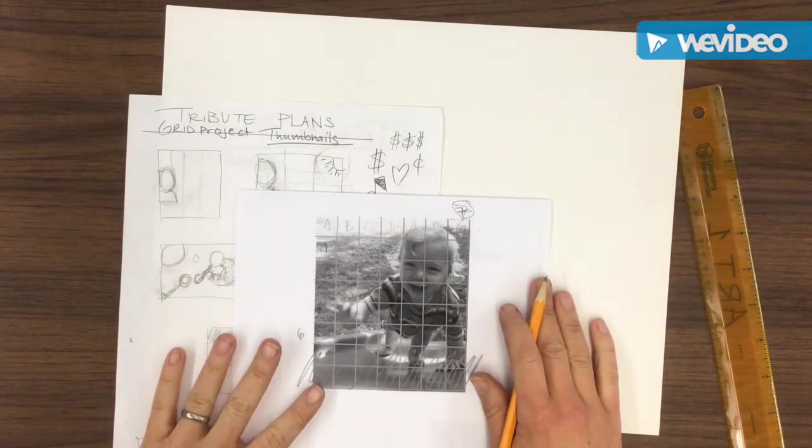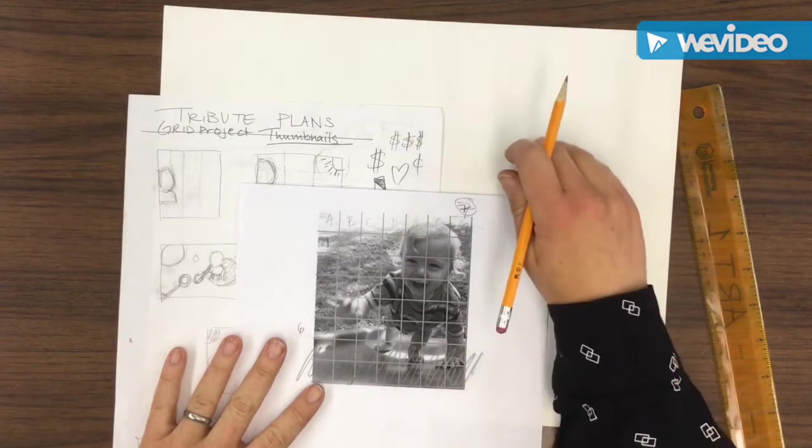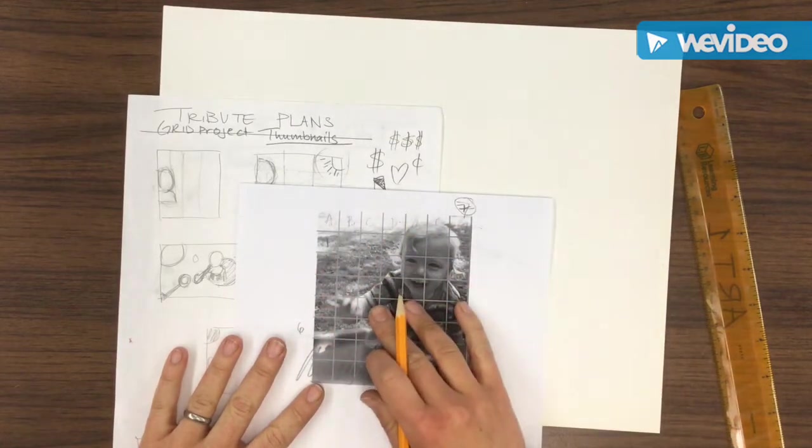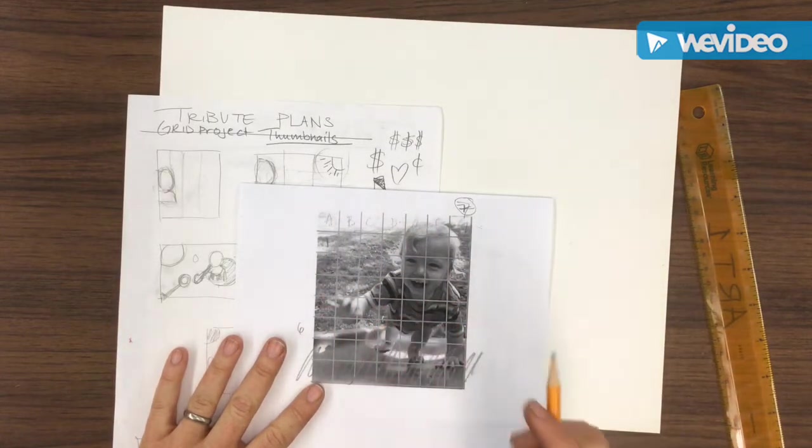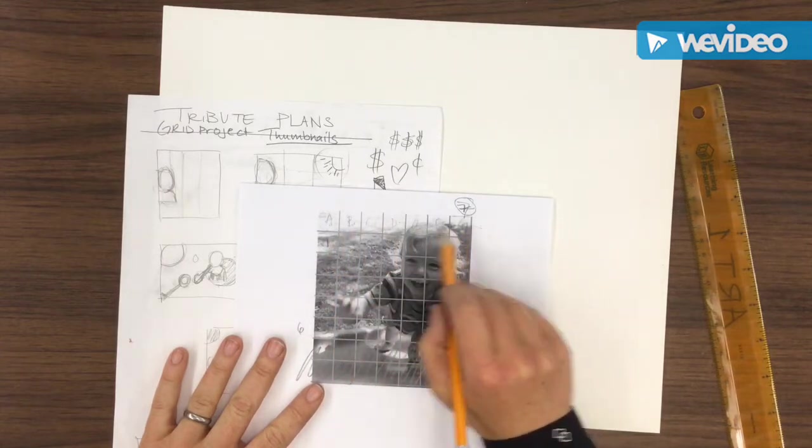Alright, so this is your video demonstration on how to create the grid on your paper so it is exactly the same as what's on your photograph. First thing is count the number of boxes across and down.